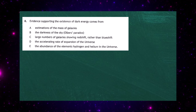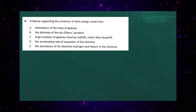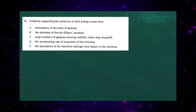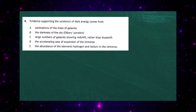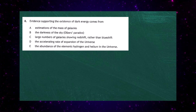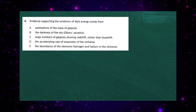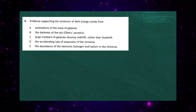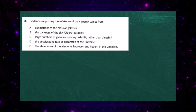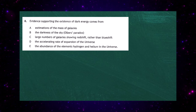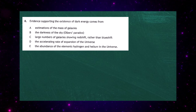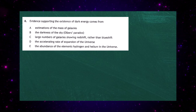Response E — the abundance of hydrogen and helium — points towards the Big Bang, not dark energy. Response D, the accelerating rate of expansion of the universe, does point to dark energy, because we don't know what is causing this increasing acceleration. The only way to describe it is to say there must be some sort of energy out there, and physicists call that dark energy.